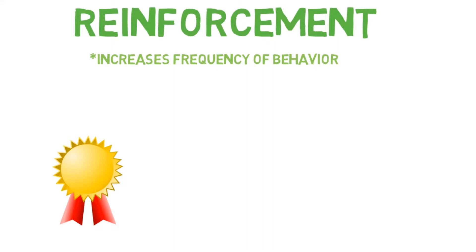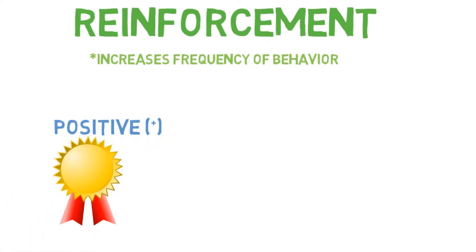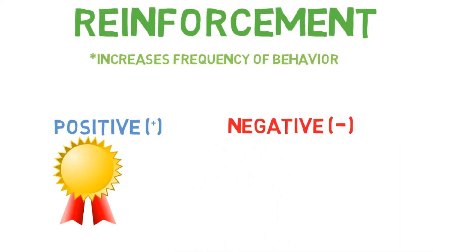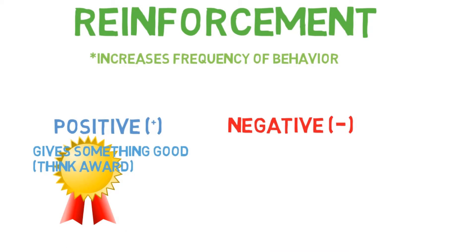But then you also have positive and negative reinforcements and punishments. A positive reinforcement is a stimulus that is given to increase a behavior. So if a mom gives her kid candy after he does something nice, it would increase the frequency of that behavior, i.e. him doing something nice. A negative reinforcement is when an aversive stimuli is taken away.